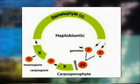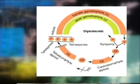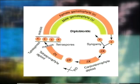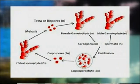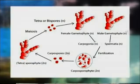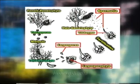Now, the diplobiontic life cycle. The diplobiontic life cycle is also a triphasic or trimorphic type of life cycle. Here, the diploid phase occurs twice in the life history which alternates with a single haploid phase. This life cycle is well exemplified by Polysiphonia.